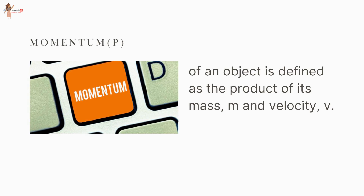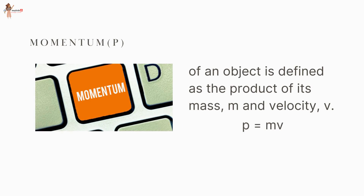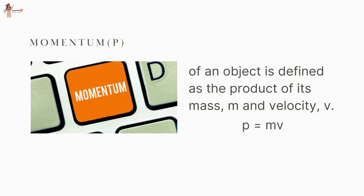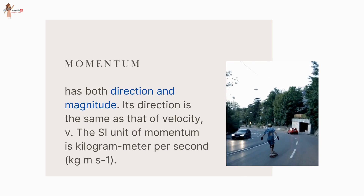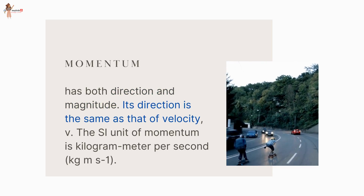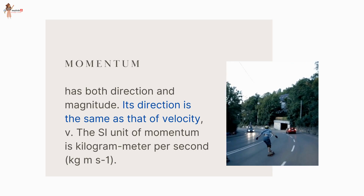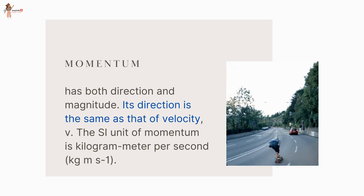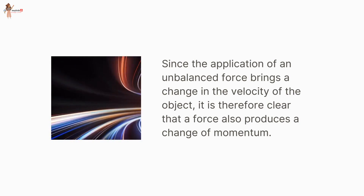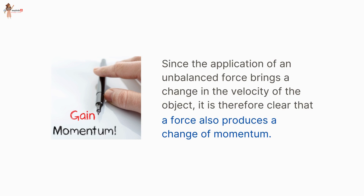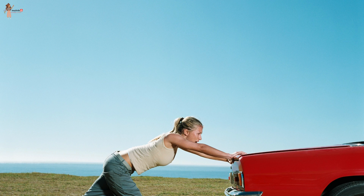Momentum was introduced by Newton. The momentum p of an object is defined as the product of its mass and velocity: p = mv. Momentum has both direction and magnitude. Its direction is the same as that of velocity v. The SI unit of momentum is kilogram meter per second. Since the application of an unbalanced force brings a change in velocity, it is clear that a force also produces a change of momentum.